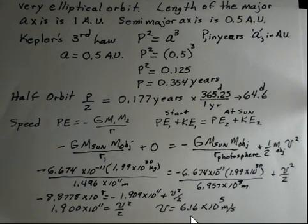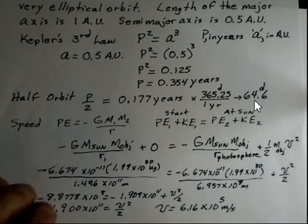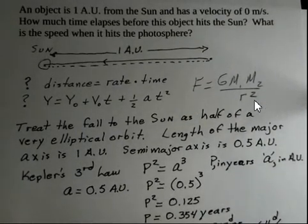So that's the end here. We've determined that if we release an object from rest and there are no planets, there's just this object one astronomical unit away from the sun. So no other gravitational influence other than the sun. We approximate this answer by saying we have an elliptical orbit. This object's not going to make it all the way to the center of the sun. It's going to be destroyed before it reaches the center of the sun.